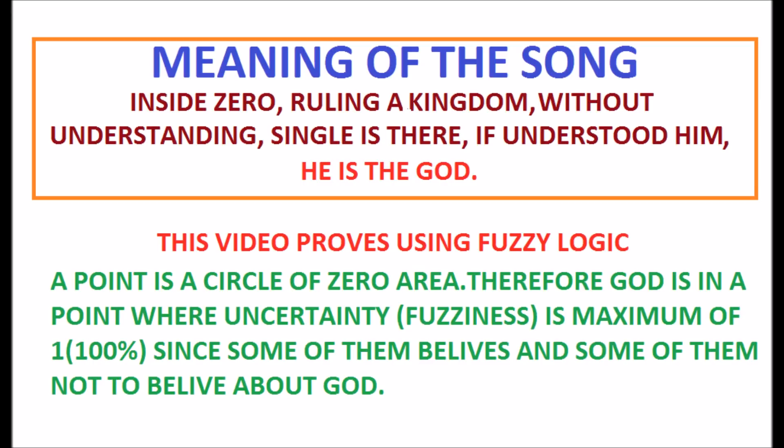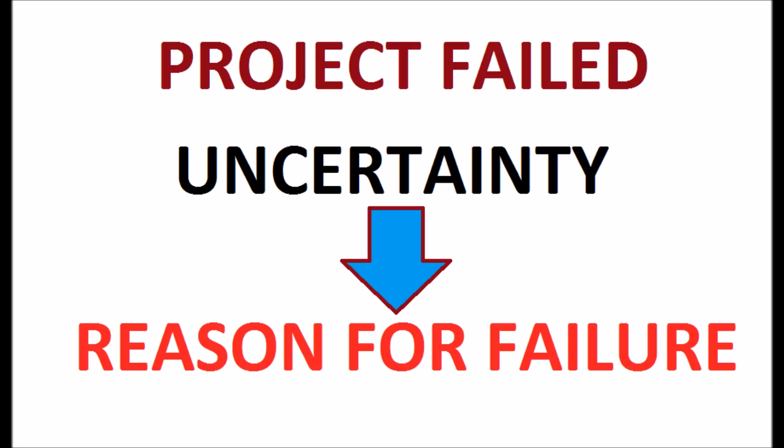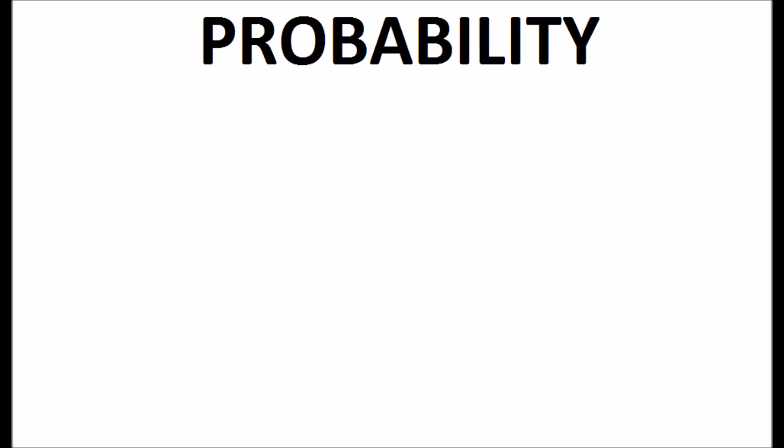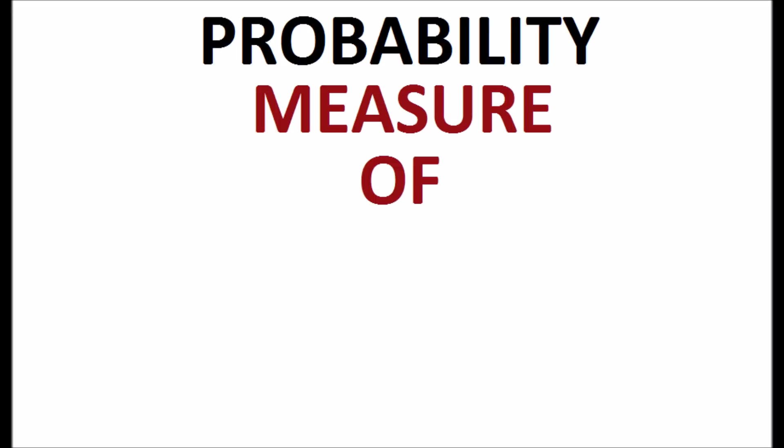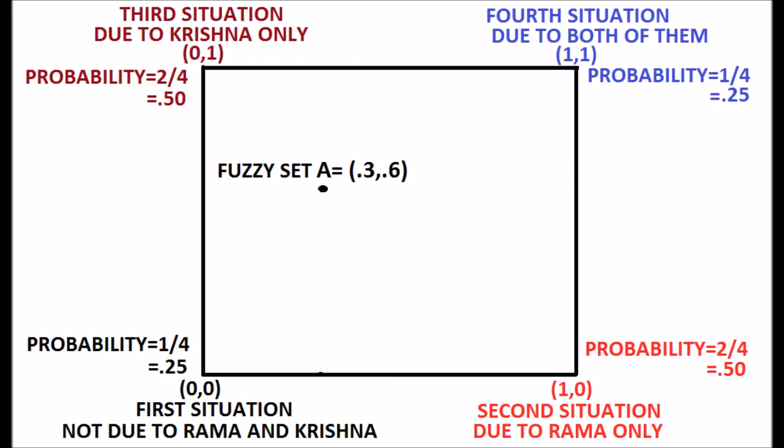Please see the video completely. A project is being done by Rama and Krishna. Project failed. Uncertainty is the reason for failure. Probability is a measure of uncertainty. Fuzziness is the measure of uncertainty in fuzzy logic. Both of them represented in a unit square, as shown in the display.